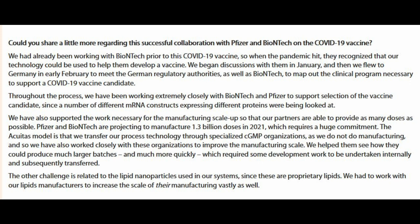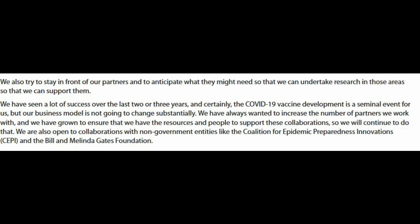Listen to that first line: 'so when the pandemic hit' — well, that was December the 31st last year. I understand that to mean that in the next few days they realized the technology could be used in a vaccine. How on earth could they have known that a vaccine would be necessary for something which, on the 31st of December, had only affected people in one family in China? How could they possibly have known this was going to be a pandemic?